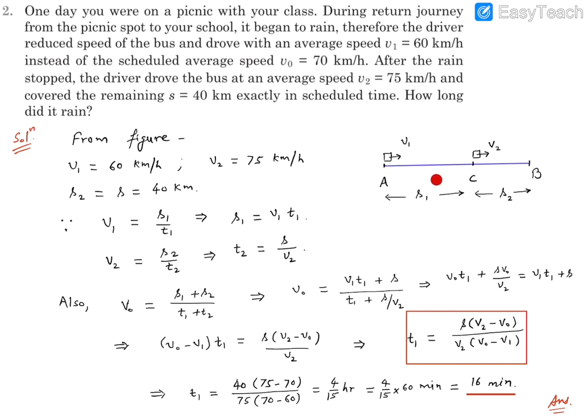scheduled time. So that means time taken by the bus in scheduled case and in this case must be equal. So we will write v0, the average speed for the scheduled case, will be equal to s1 + s2, the total distance divided by total time which is t1 + t2.